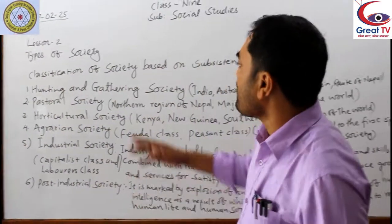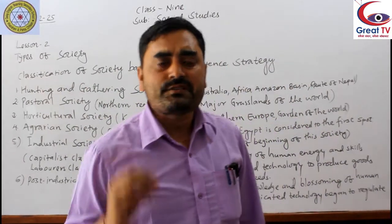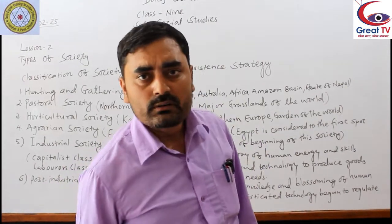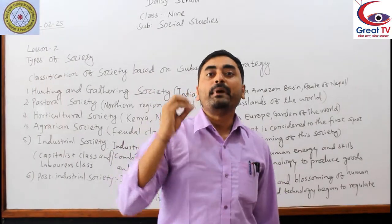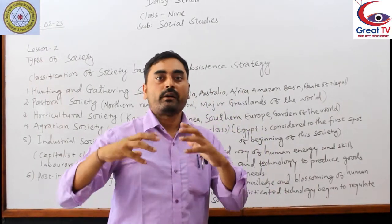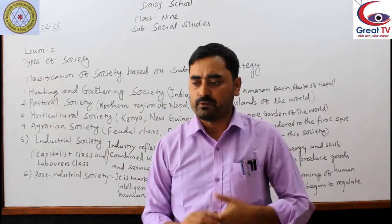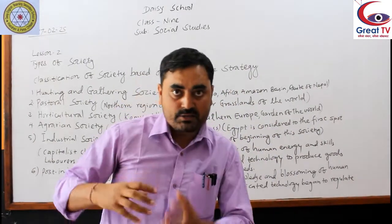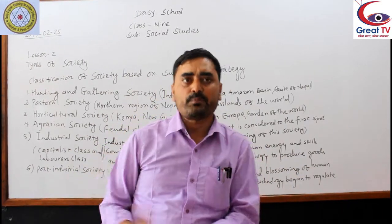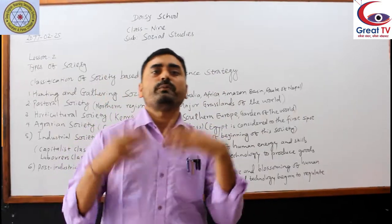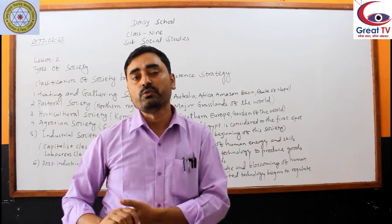Number one — hunting and gathering society. This is considered as the beginning of the human society. Different historians, anthropologists, and sociologists have different views regarding the date or time for the beginning of the human society. But approximately we can say around 12,000 years ago, this type of society began in the human world.